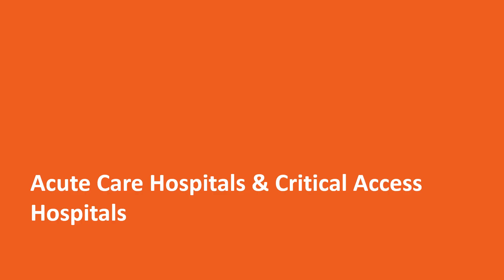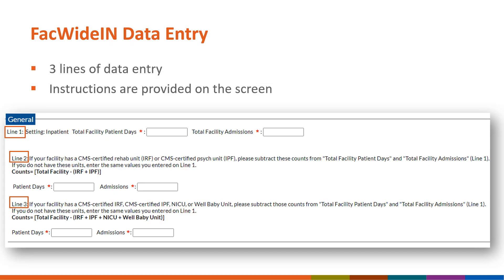The following section is specific to the FACWIDEIN denominator form for acute care hospitals and critical access hospitals. If your facility is a long-term acute care hospital or an inpatient rehabilitation facility, you can skip to the next section starting on slide 22. The FACWIDEIN denominator record for acute care hospitals is shown on this slide, highlighting the three required rows of data that need to be entered in order to successfully save the form.